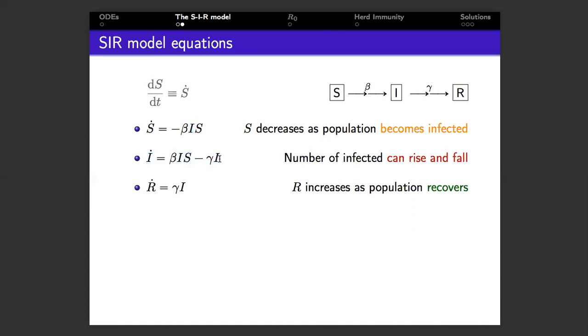The second equation tells us how the number of infected changes with time. There are two terms corresponding to people moving from S into I and then from I into R as they recover. Depending on the relative size of these two terms, the number of infected might rise or fall. The final equation tells us that the rate of change in the number of recovered is proportional to the number of infected. And also that R can only increase because its rate of change is positive. There are no minus signs here. This rate is controlled by some number gamma, which can be measured from patient data. Now, this is the SIR model of infection spread, and it has been particularly successful in describing how measles and chickenpox spread in a population.